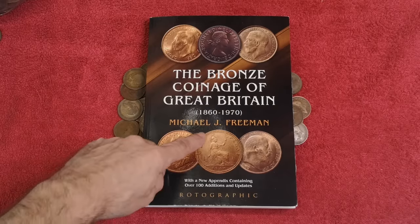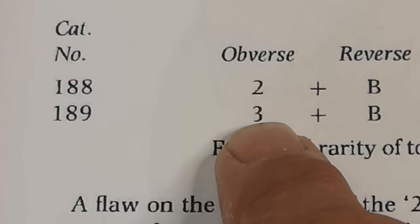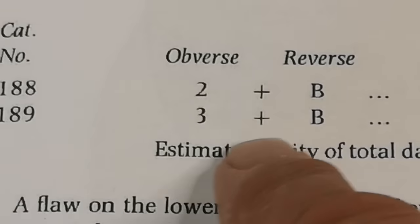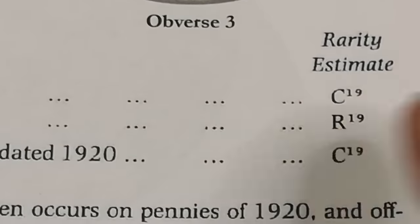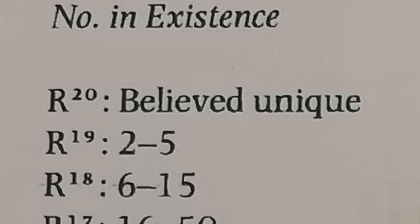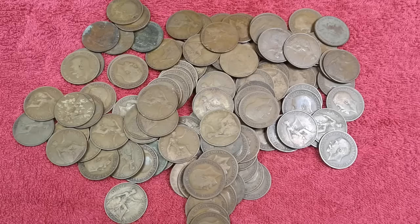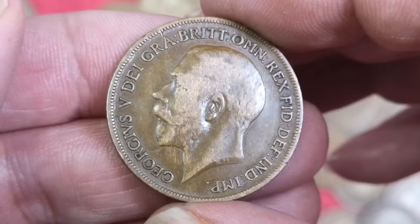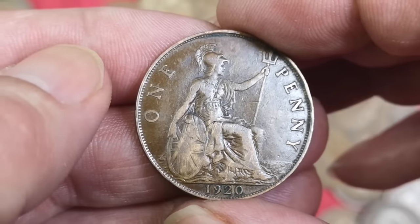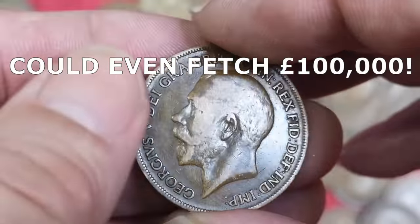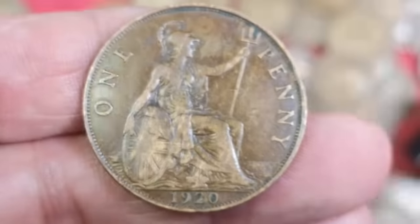This is 'The Bronze Coinage of Great Britain' by Michael J. Freeman — I'm not sponsored, but every coin collector should have it. Catalogue number 189: obverse three, reverse B — they're all reverse B today so that doesn't affect anything. Obverse three is the crucial one for the 1920 penny, and the rarity is R19. R20 would be believed unique, but R19 means Michael J. Freeman thinks there could be two to five out there somewhere — and I agree. The reason no others have turned up yet is, as you've just seen, it's so difficult to spot. If you find an obverse three penny dated 1920 and it's genuine, I'd say thousands — 10,000 pounds plus. The British penny is a highly collected coin, there are so many completionists who'd love to get their hands on it, and the demand would be astronomical.